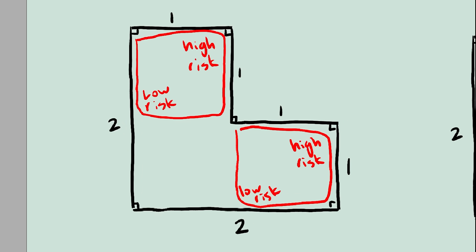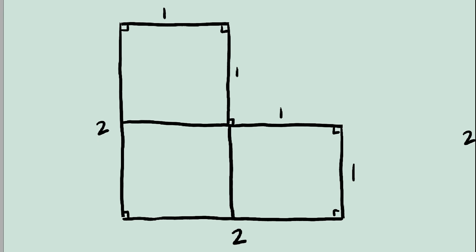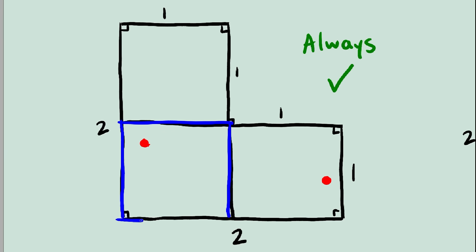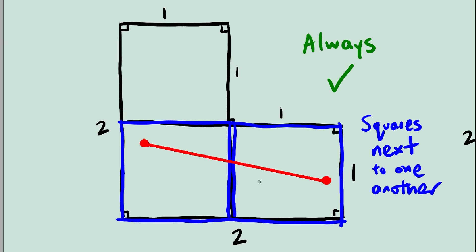Alright, what progress have we made? We've split up the shape into three squares, and we've realized that if two people are in the same square, they can definitely see each other. Furthermore, if two people are in adjacent squares, they can also definitely see each other.